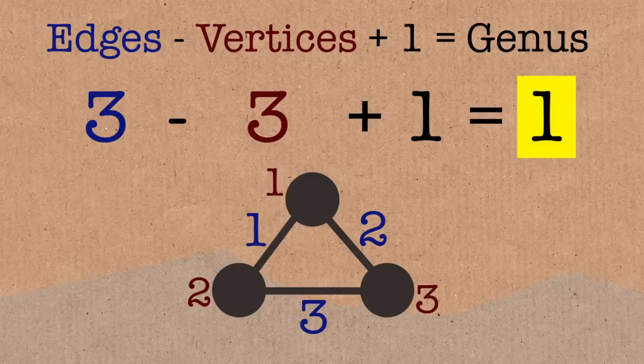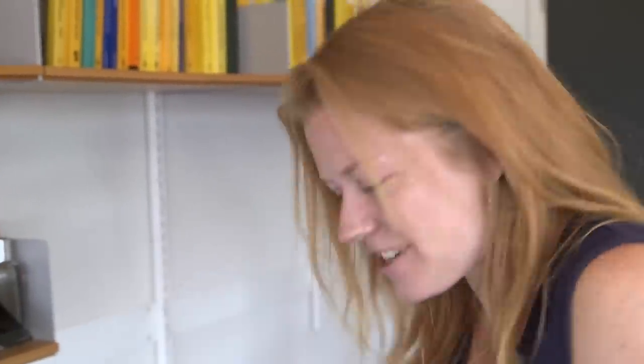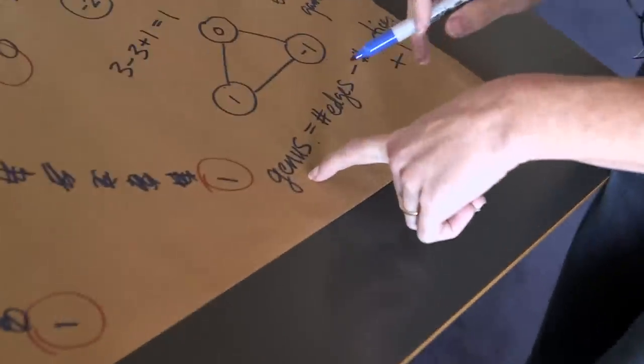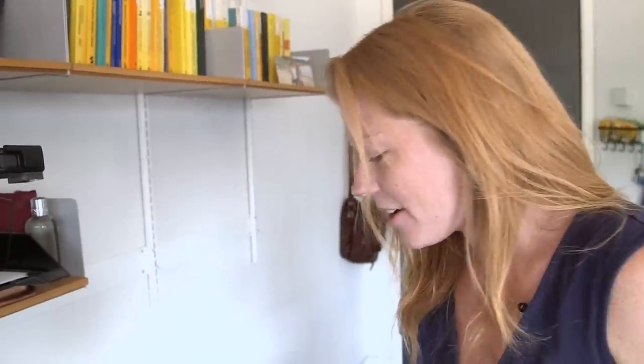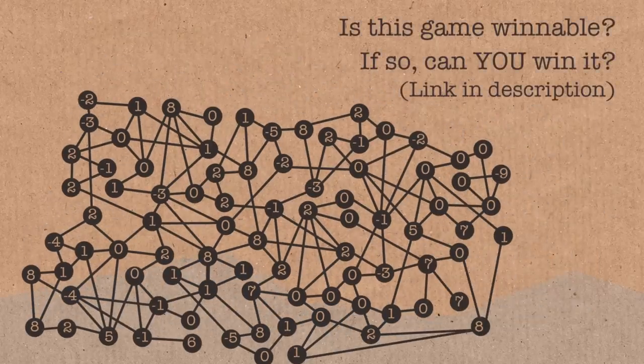And so this is giving me a way to detect this notion that I mentioned earlier of being, oh, it's a little too connected, right? It's too complicated to try and move money around the graph. And this number, which is the genus, gives you an idea of how much complication there is. And so it turns out that you can show that a graph must be winnable. There is some way to win this game if the amount of money you have is at least as large as the genus of the graph.